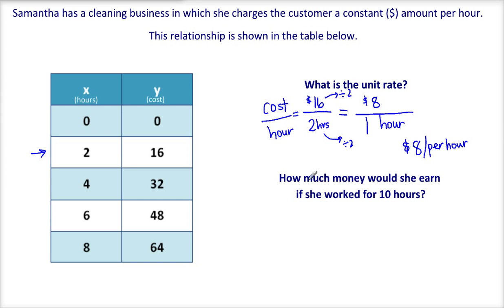The next question says, how much money would she earn if she worked for ten hours? Well, we could find ten on our table, but it's not listed.